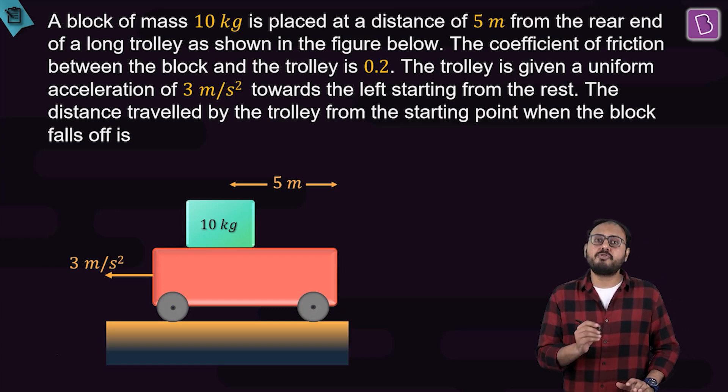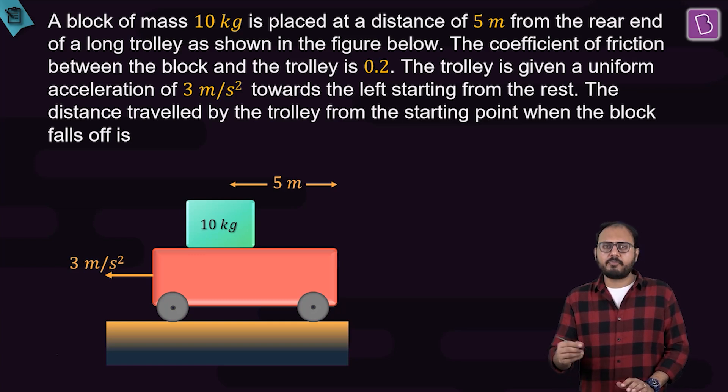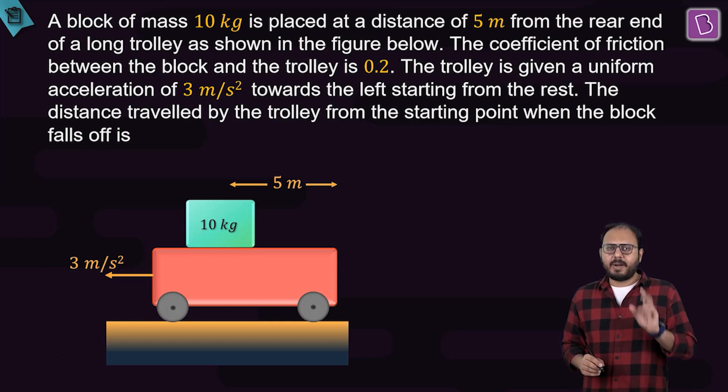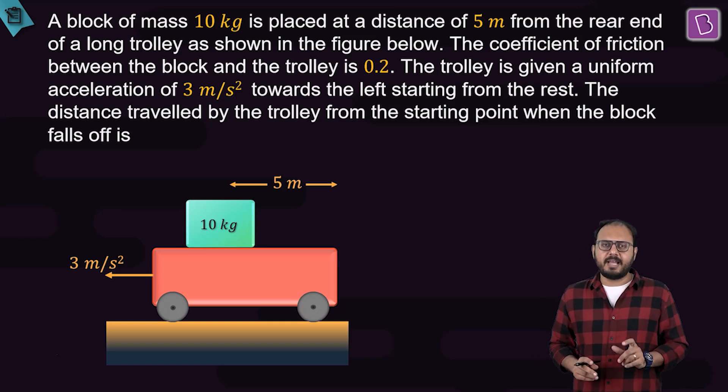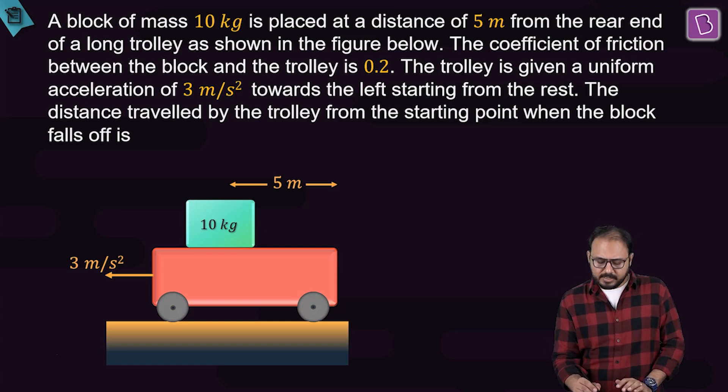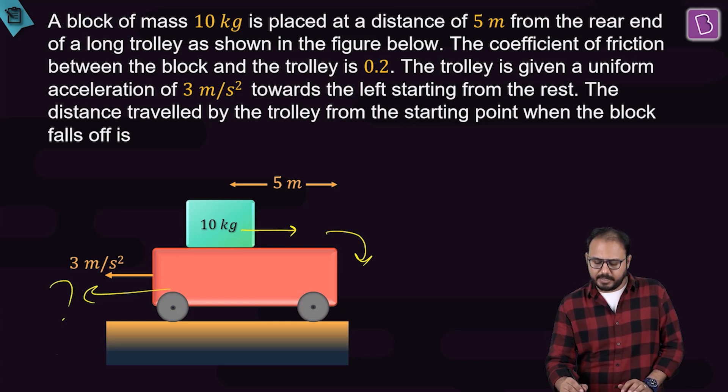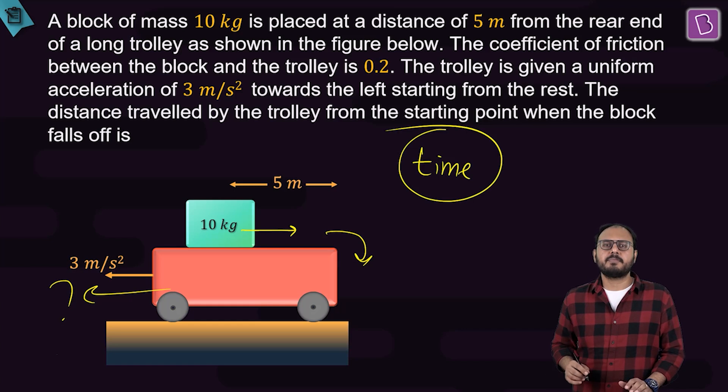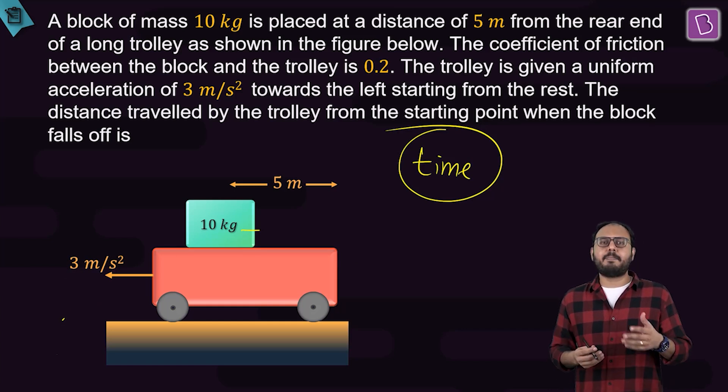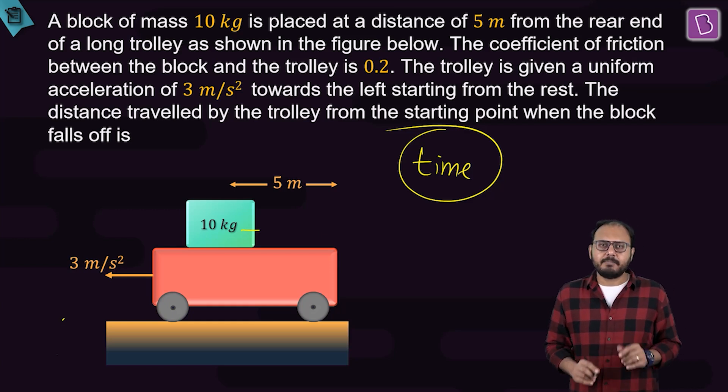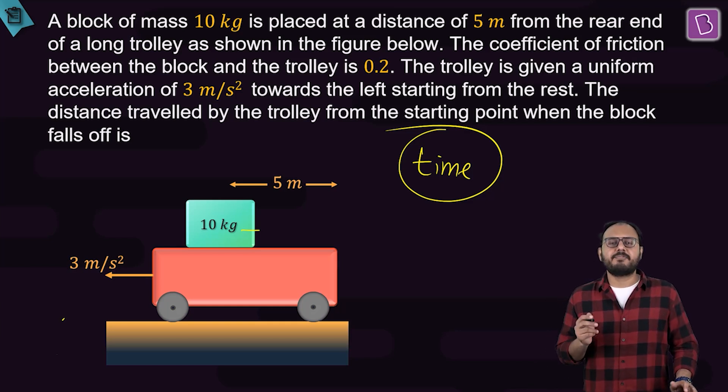Question is, what is the distance travelled by the trolley from the starting point when the block falls off? In other words, the block slides back and eventually falls down. In the same time, how much does the trolley move? The key parameter which will relate these two movements is time. In the time taken by the 10 kg block to slip back and fall, in that same time, how much does the trolley go forward? Time is independent of the frame choice. That means I can find the time from one frame and keep it in the other.